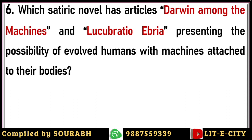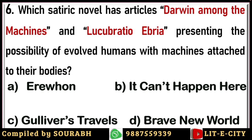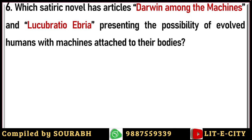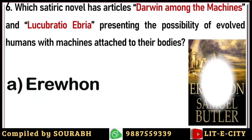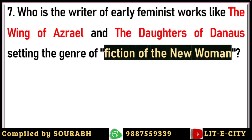Next question: which satiric novel has articles 'Darwin Among the Machines' and 'Lucubratio Ebria,' presenting the possibility of evolved humans with machines attached to their bodies — a sort of technological utopia? Options are Erewhon, It Can't Happen Here, Gulliver's Travels, and Brave New World. The correct answer is Erewhon by Samuel Butler, and the name itself is an anagram of 'Nowhere.'